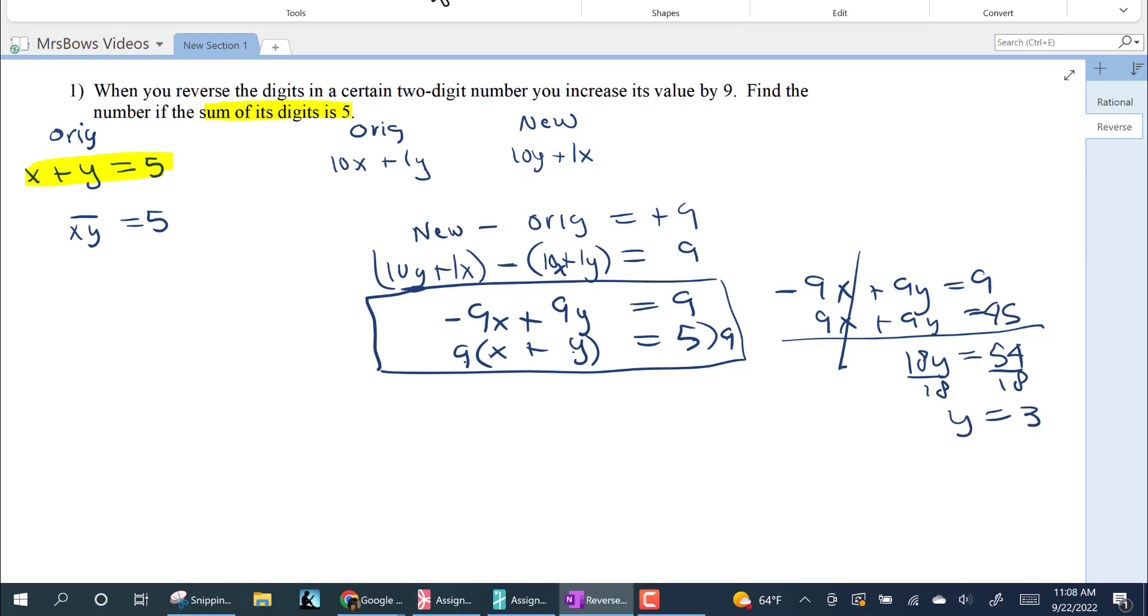So we come up here at the original. So x plus three is equal to five, subtract three, subtract three. The tenth digit is two. So 23, the sum of those digits is five.